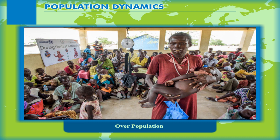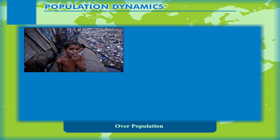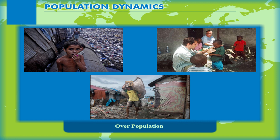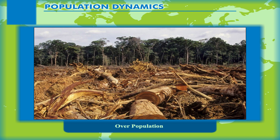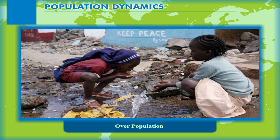Inadequate facilities of education and health services, and lack of employment lead to an increase in many social crimes. Increase in population creates heavy demand on natural resources like forests, which begin to deplete very fast. Water supply also becomes a problem due to high population growth rate, leading to insanitation and the spread of diseases.